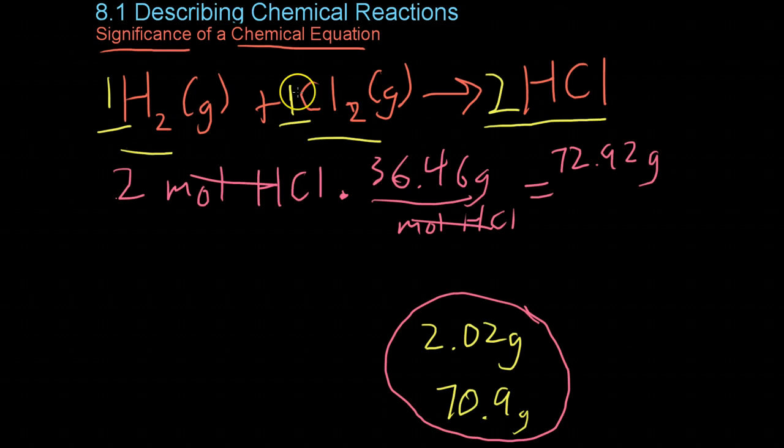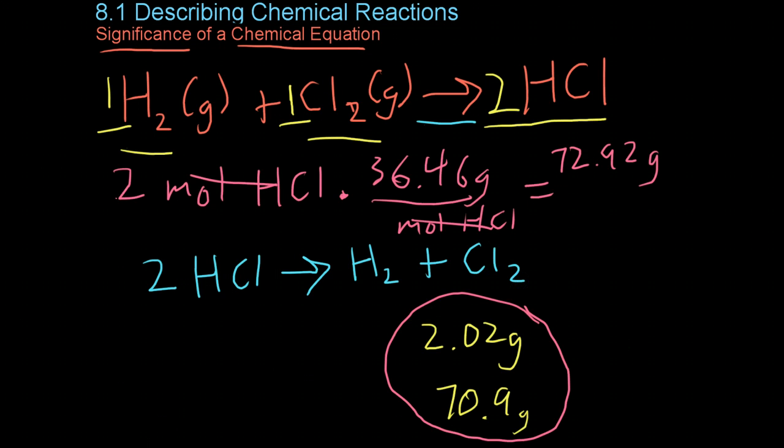Now, because chemical equations can be thought of somewhat like algebraic expressions, where one side of the arrow has to be equal to the other side in terms of number of atoms of each element, this means that these equations can be reversible. So we'd know that two moles of hydrogen chloride could conceivably break down into one mole of hydrogen and one mole of chlorine. That is, much like an algebraic expression, a chemical equation can be written either way, and it would still be true quantitatively.